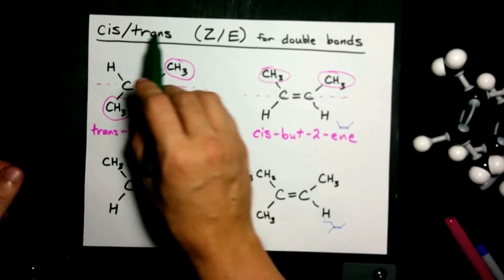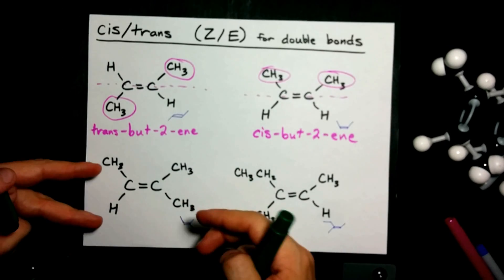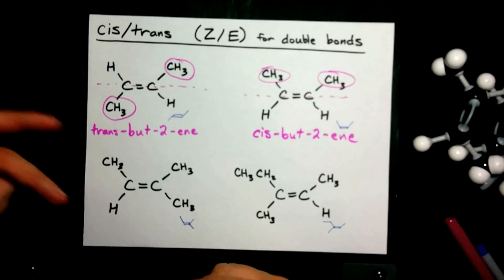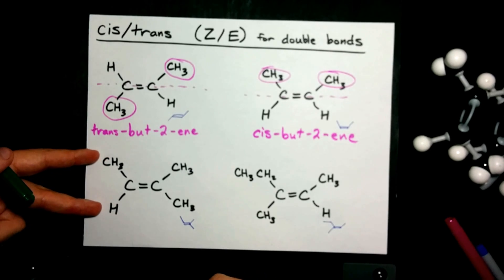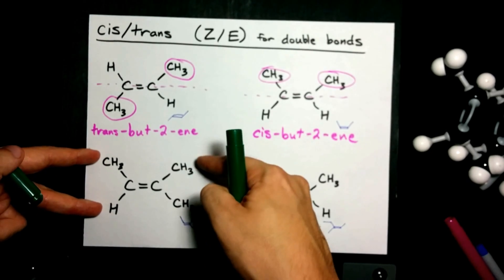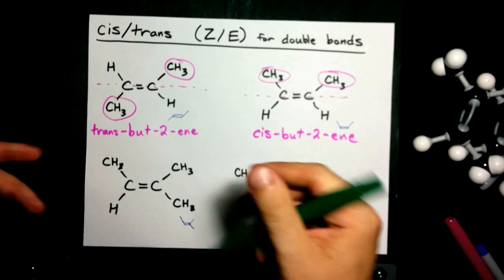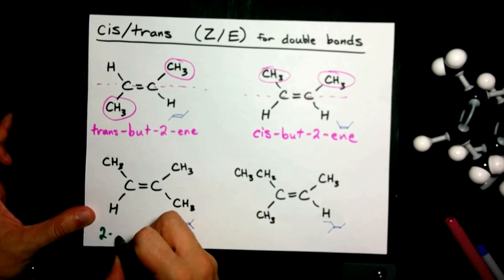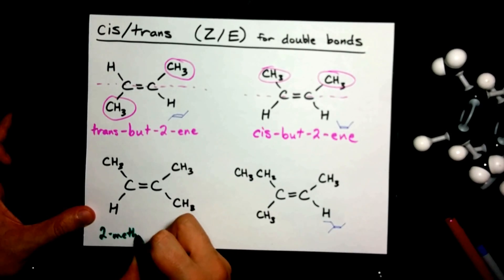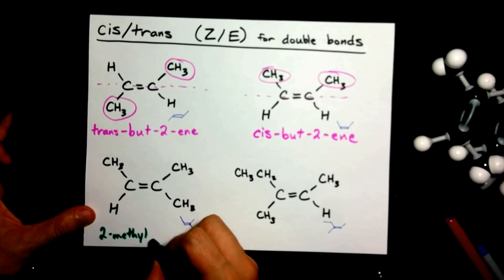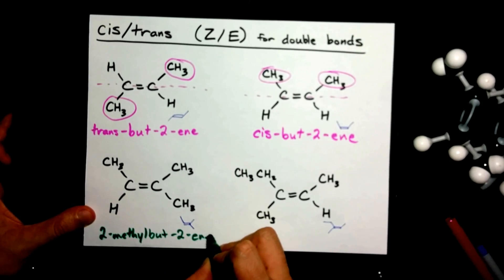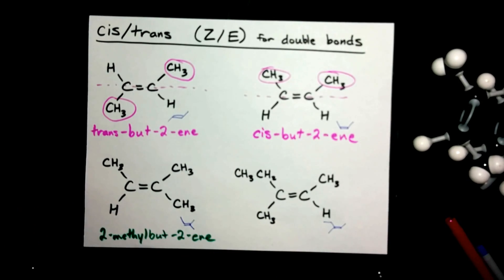In order to even have cis-trans isomers, you need two different things attached to this carbon, and two different things attached to this carbon. Otherwise, it's not cis-trans isomerism at all. Well, this is just straight up 2-methyl-but-2-ene, and that's it. No cis-trans to worry about.